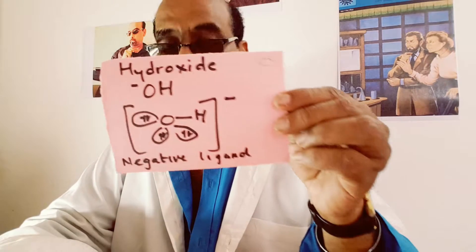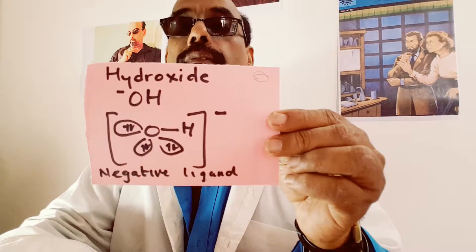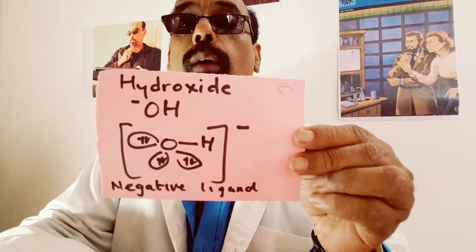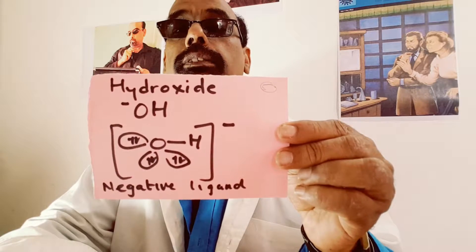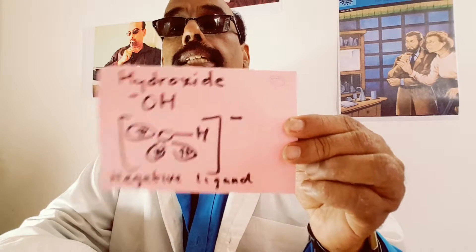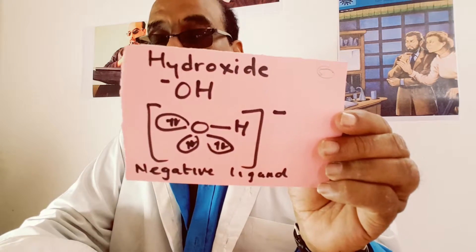Another example of a ligand is hydroxide, OH⁻. It has at least one lone pair of electrons. Since it is negative, it is a negative ligand.